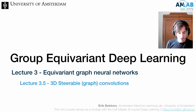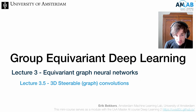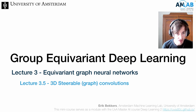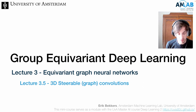Welcome back to this fifth sub-video on the third lecture on equivariant graph neural networks. So far we've explained the message passing framework, how to make them equivariant, and how to work with steerable features in 3D. In the remaining videos, I want to show some examples of how these ideas are applied in practice, going over papers of the steerable kind — steerable group convolution in a message passing framework.